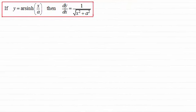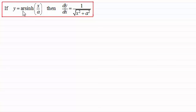Hi there, welcome to the first video in my series on differentiating inverse hyperbolic functions. In this one we're going to be looking at differentiating y equals the inverse sine of x over a, where a is a constant.